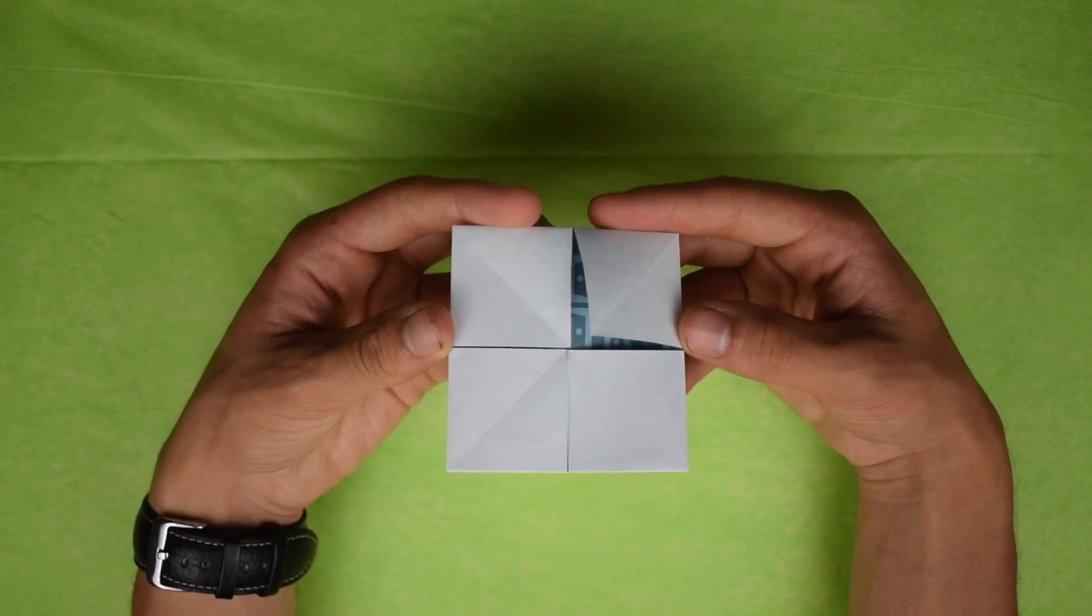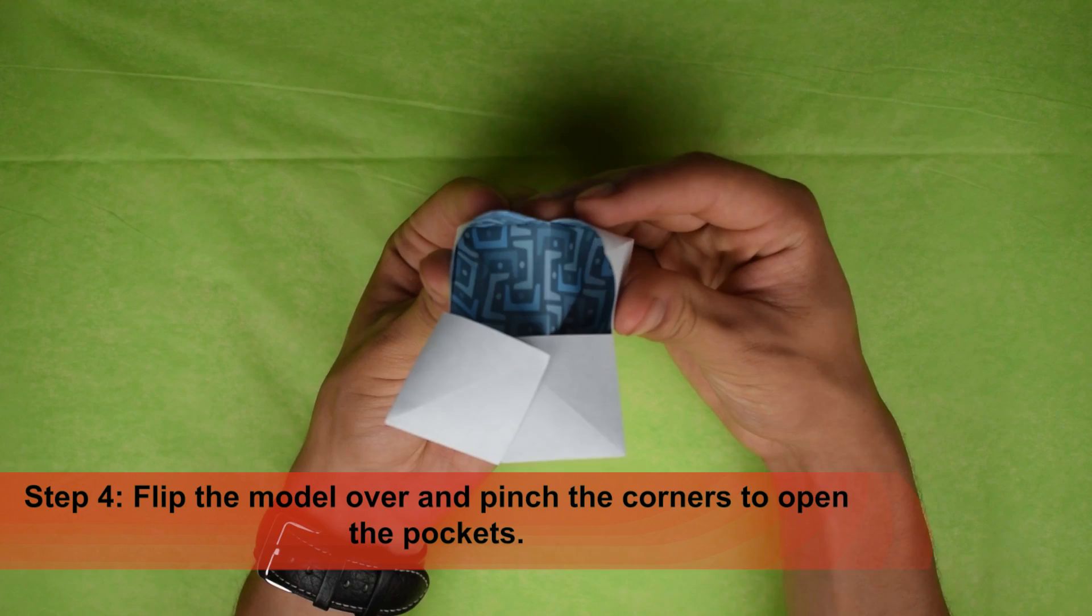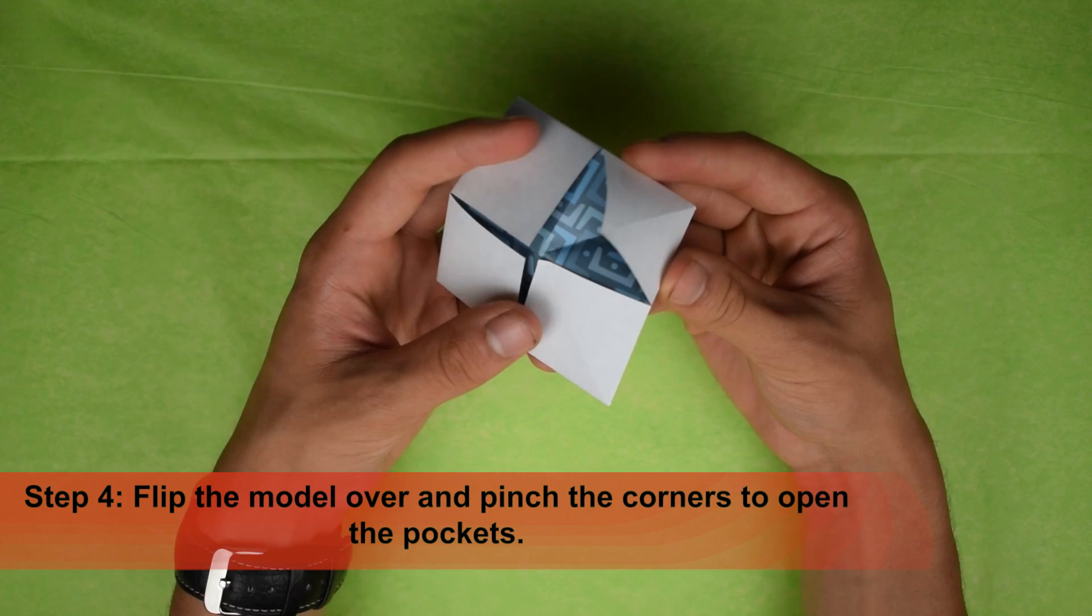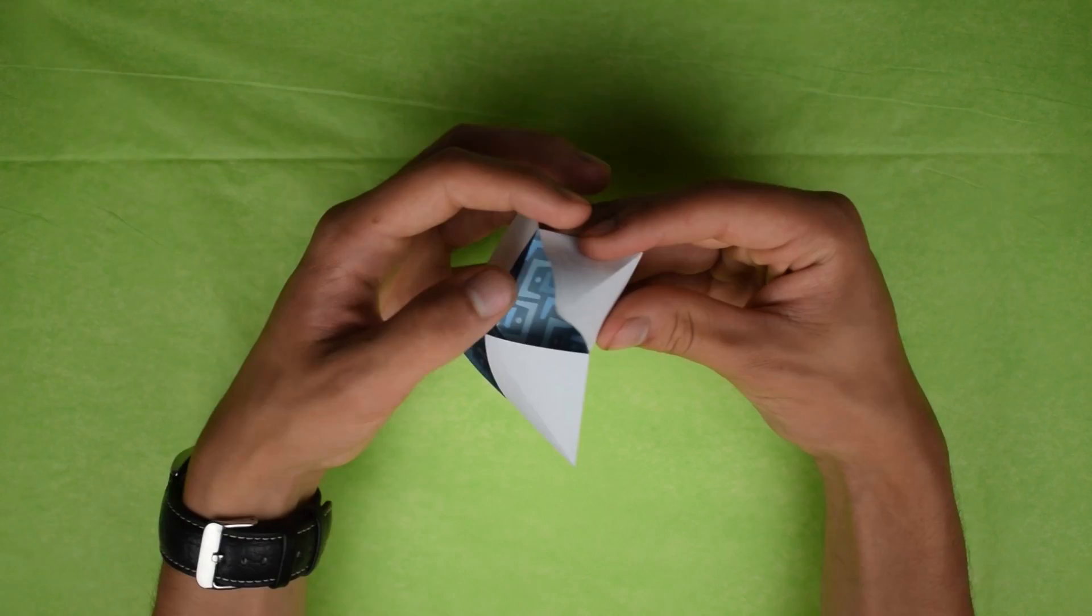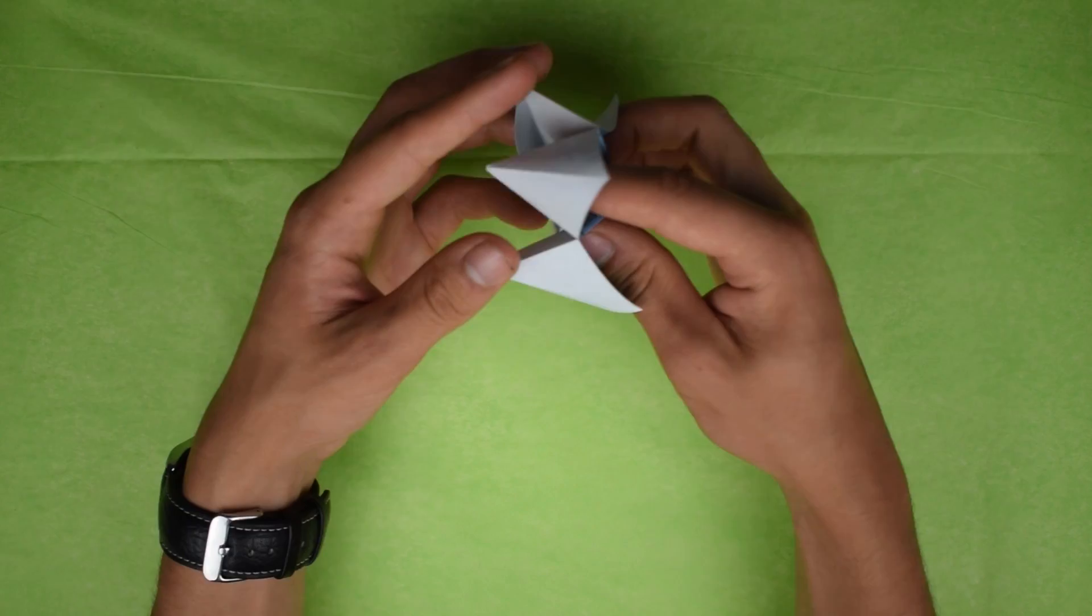Alright, so just kind of open it up like that. Let's see we have these two open. And we'll do the same thing over here. You'll see we'll start to form a shape. Sometimes it helps to keep your finger in there while you do another one. The basic idea is that we're just opening up these pockets.